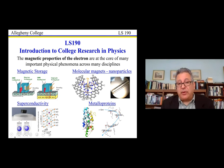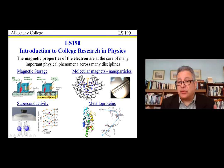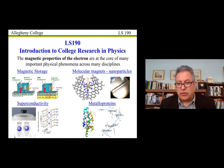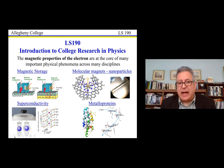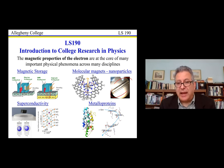We will focus on four areas of magnetism using the ESR technique. Students typically research each one of these areas based on what they like, then choose an area and do a presentation. The areas are: magnetic storage — how we store information on hard drives; molecular magnets and nanoparticles, which is an area of research in my lab; superconductivity, which is a big area of research nowadays as people try to understand high-temperature superconductivity; and metalloproteins in the biological realm.